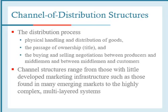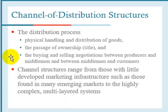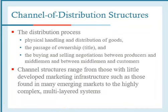These three processes are: physical handling and distribution of goods; the passage of ownership or title; and third, the buying and selling negotiation between producers and middlemen on one side, and between the middlemen and the customers on the other side. The channel structure ranges from those with little developed marketing infrastructures, such as those found in many emerging markets or less developed countries, to highly complex or multi-layered systems like those found in Japan and the USA.